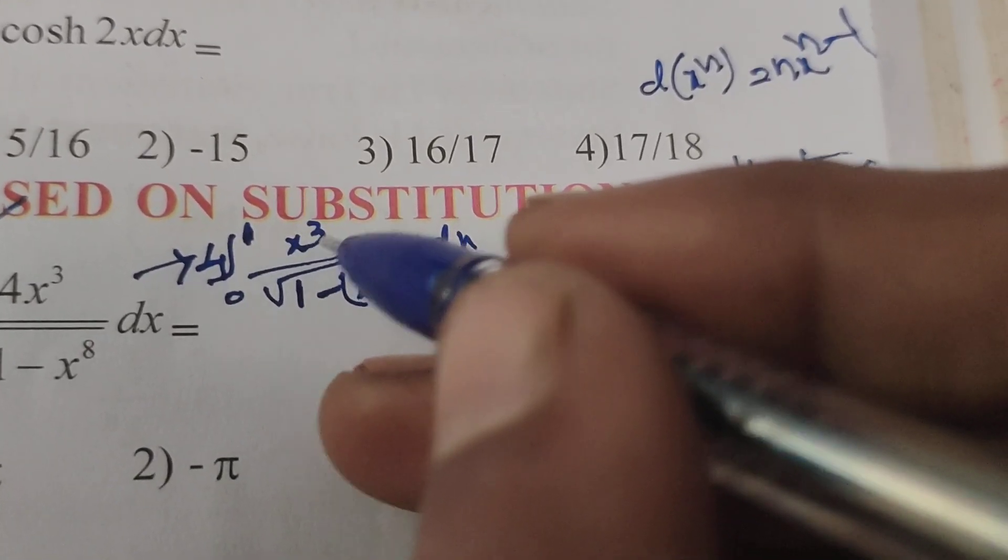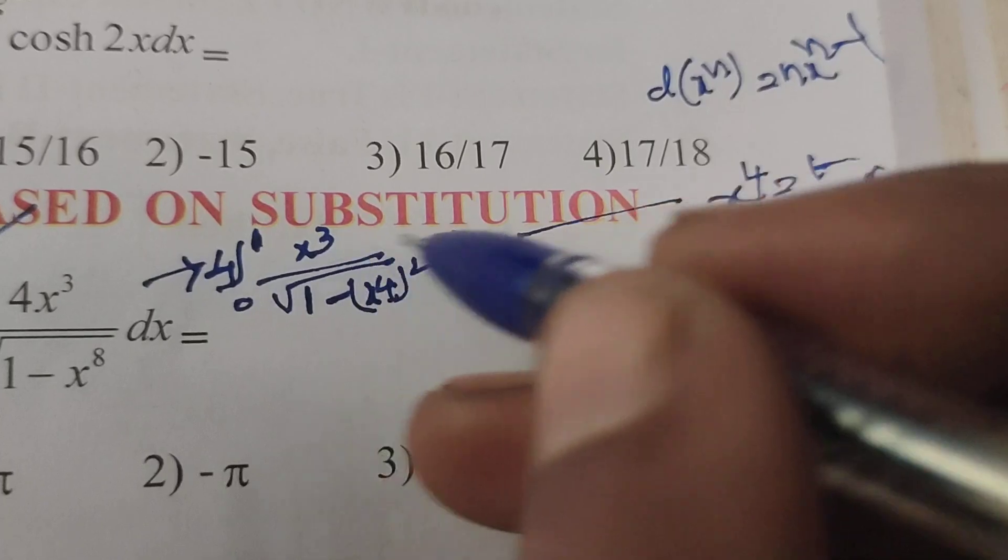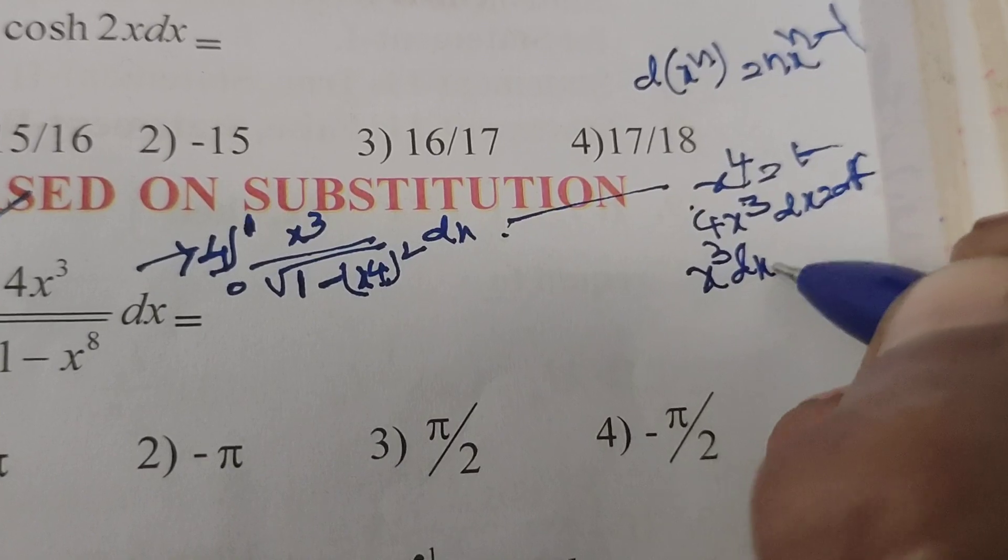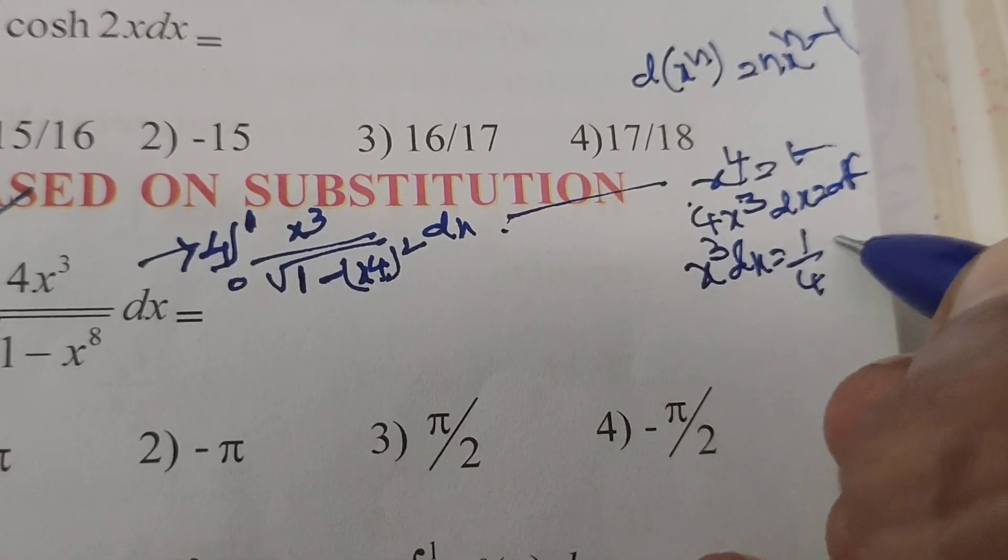Here we want only x³ dx for our substitution, so that x³ dx equals to 1/4 dt.